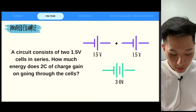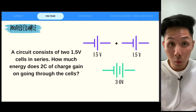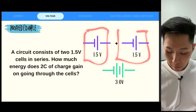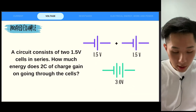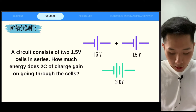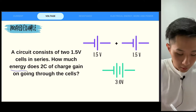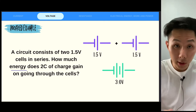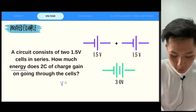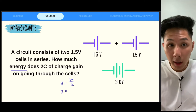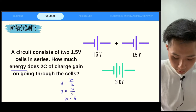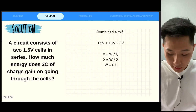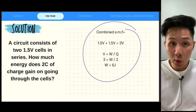Another question: a circuit consists of two 1.5-volt cells, so together they have 3 volts. How much energy does 2 coulombs of charge gain going through the cells? We use V = W/Q: V is 3 volts, Q is 2, so W = 3 × 2 = 6 joules.